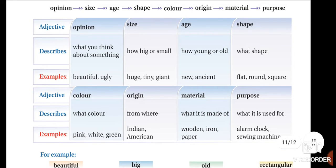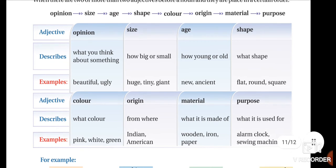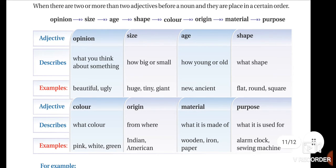Next is material — what it is made of. For example: wooden, iron, paper. And finally, purpose — what it is used for. For example: alarm clock, sewing machine. These are the eight categories in the order of adjectives.